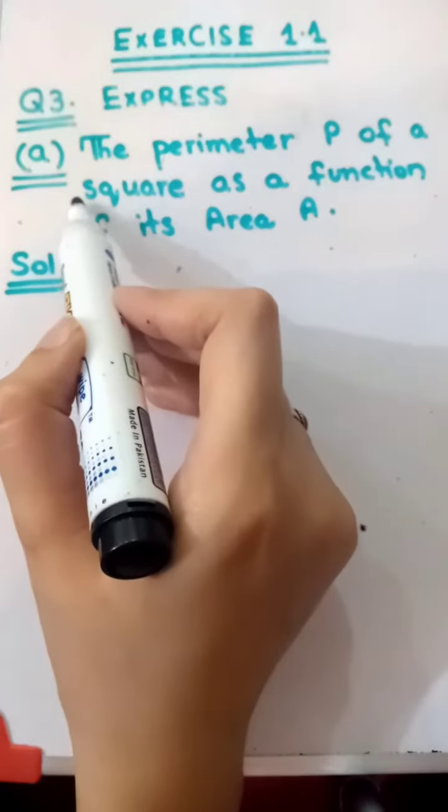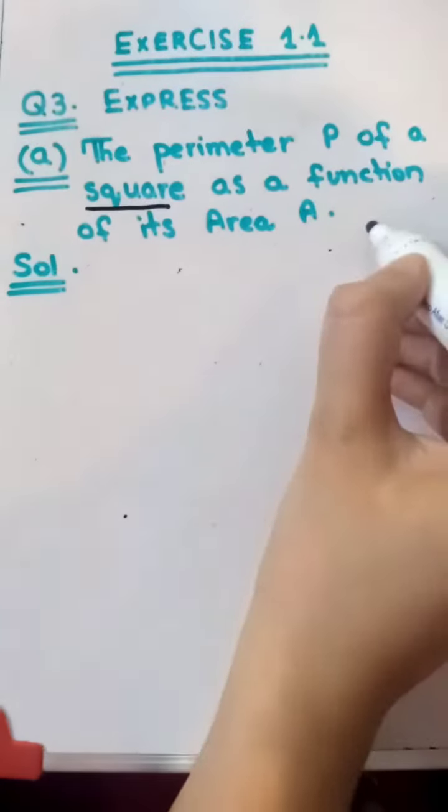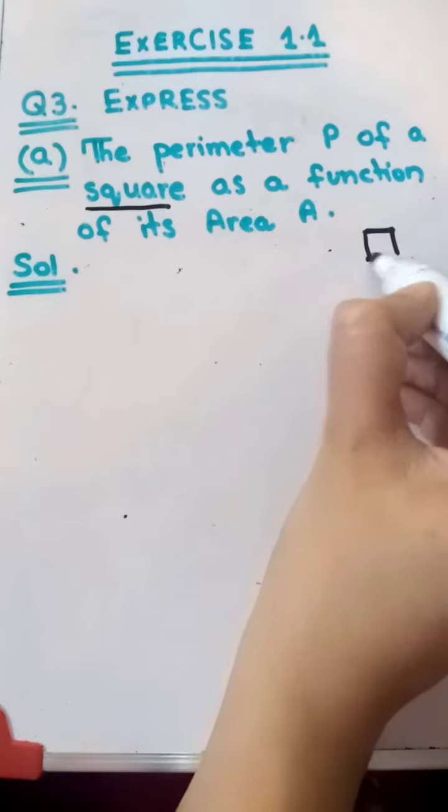First of all, the question tells us that it is a square. As you know, a square has four sides. We will let x be the side of the square.